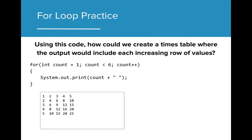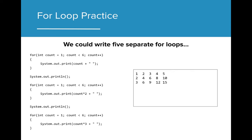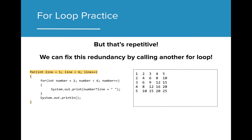Now that we've created this simple loop, how can we use that code to create a times table where each line begins with the next whole number and includes the first 5 multiples of that whole number? With what we know right now, we can implement this by writing 5 separate for loops that will print each line out individually. But writing out each for loop is an incredibly repetitive process. We can actually fix this issue by putting our original for loop inside of another for loop that will print out all 5 lines.